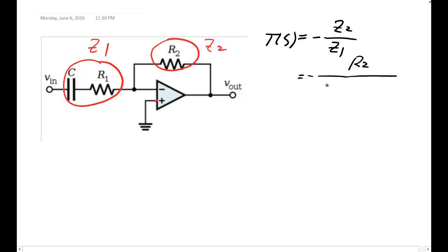Z1 will be C in series with R1, so it's 1/(Cs) plus R1. So this is the transfer function.